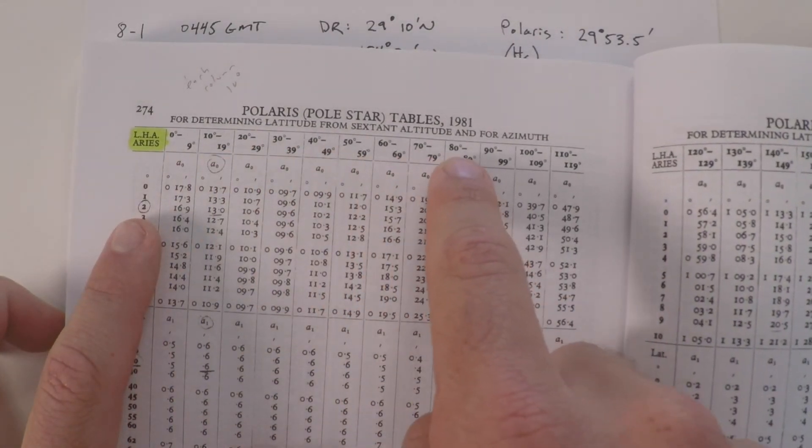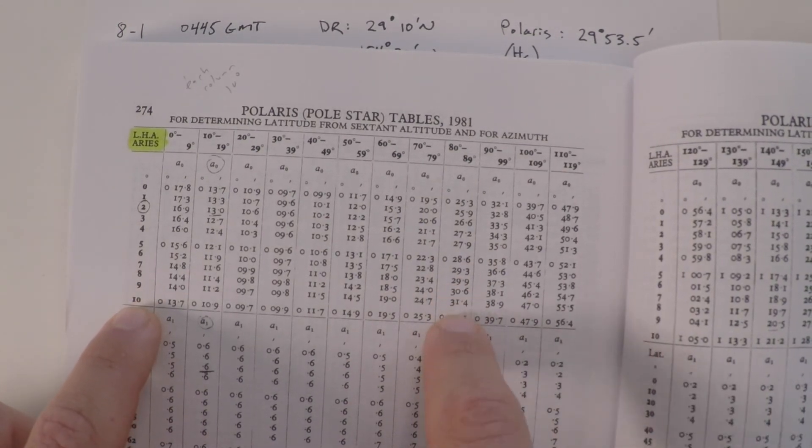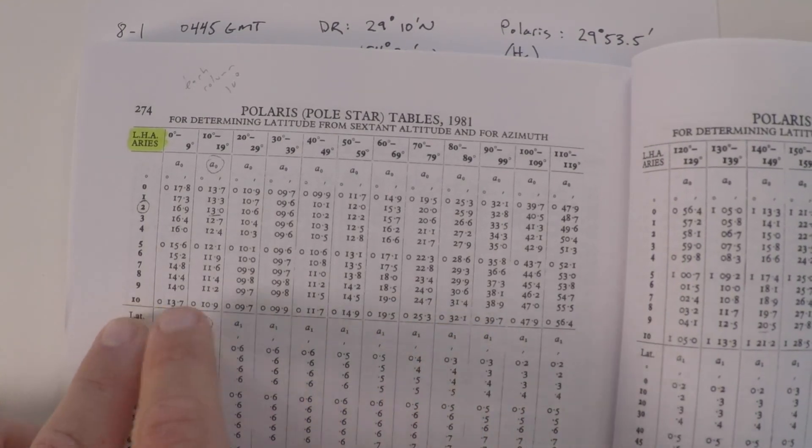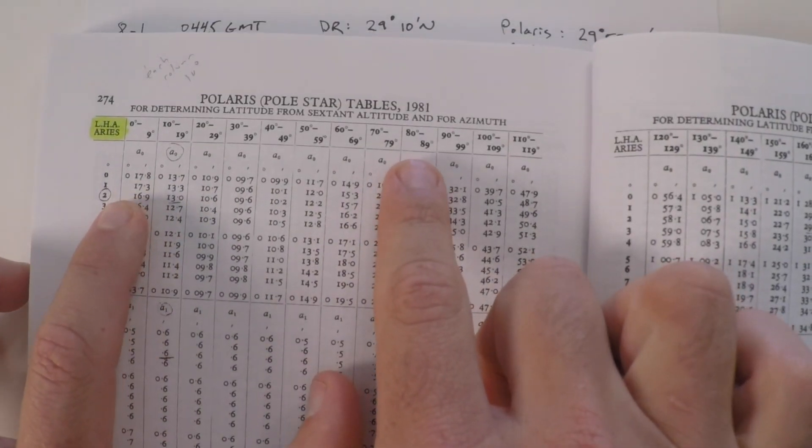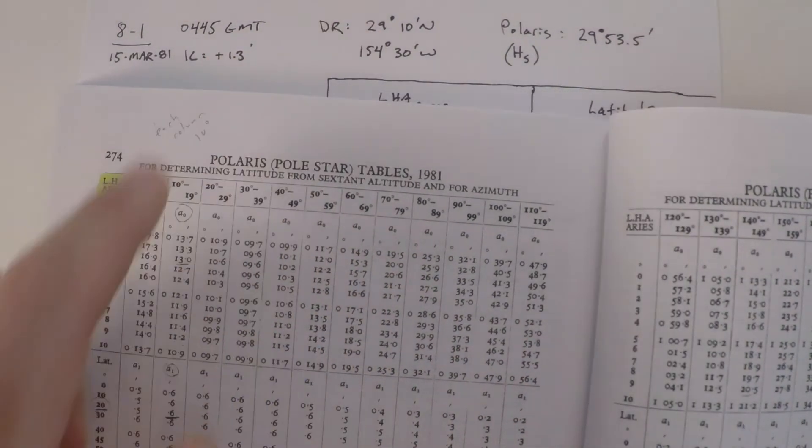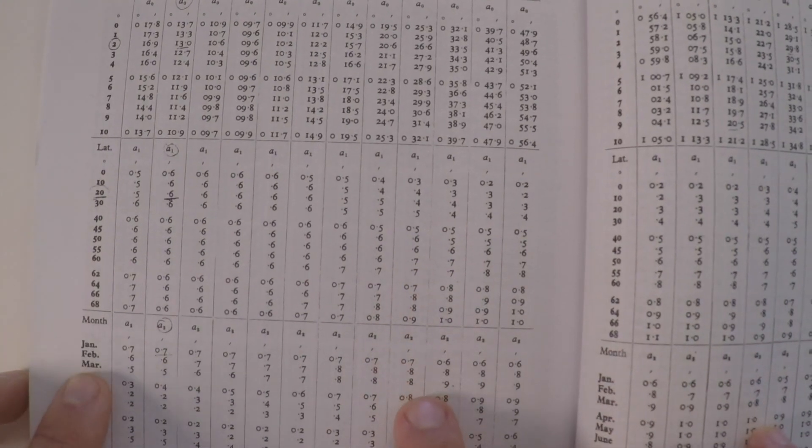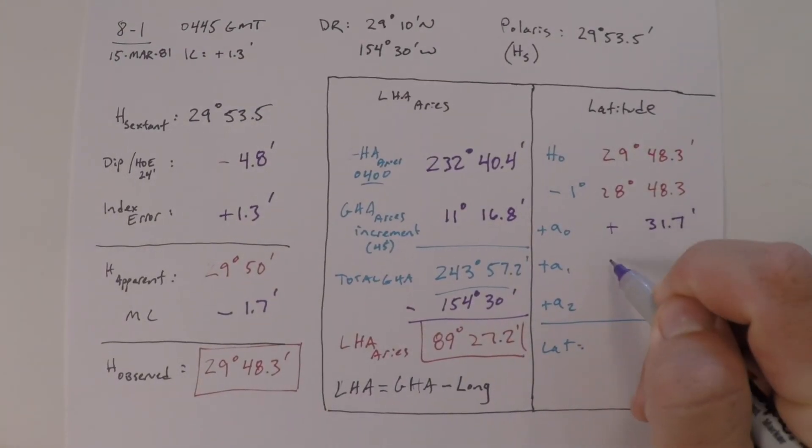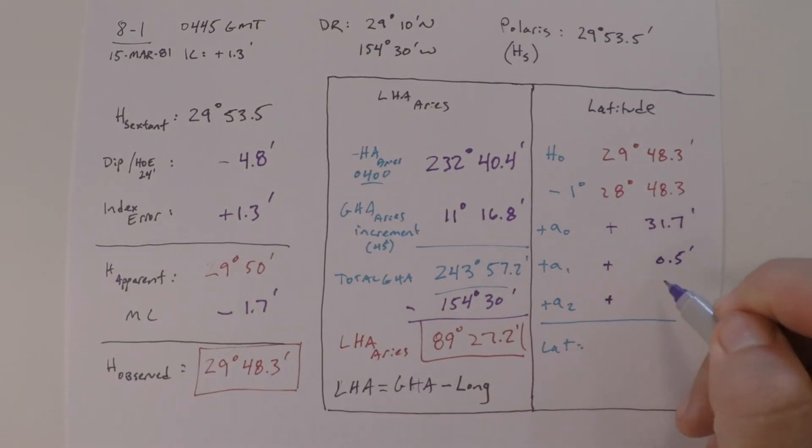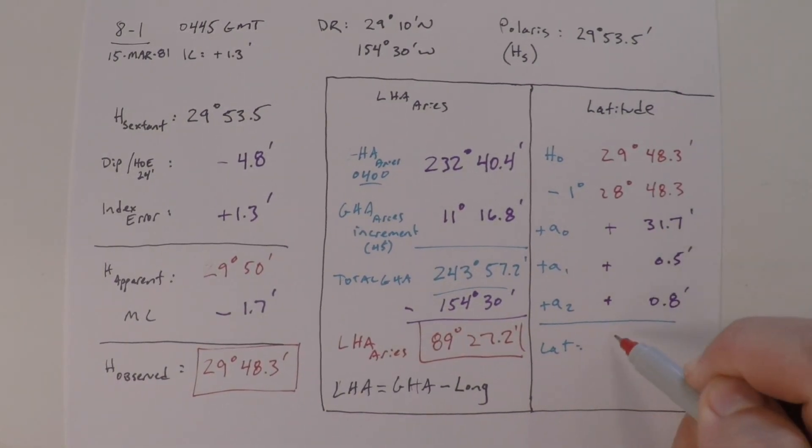For these three corrections, what we need to do next is look in the Polaris tables for the LHA of Aries, 89 degrees, 27.2. We'll say it's about 89 and a half degrees. Here's 80 to 89, and over here on the left you can see 89 and 90. We need to go about halfway between 31.4 and 32.1 because we're about halfway between 89 and 90. So that correction would be plus 31.7 minutes. The A1 and A2 corrections are just done from the same column. Our DR latitude was 29 degrees in 10 minutes, so about 30. So that A1 correction should be about 0.5. And the A2 correction is just given by the month. Our problem says that we're in March, so it would be a plus 0.8 correction. So with those two corrections, we've got a plus 0.5 minutes and a plus 0.8 minutes. That gives us a total latitude when we do this math out of 29 degrees, 21.3 minutes north.